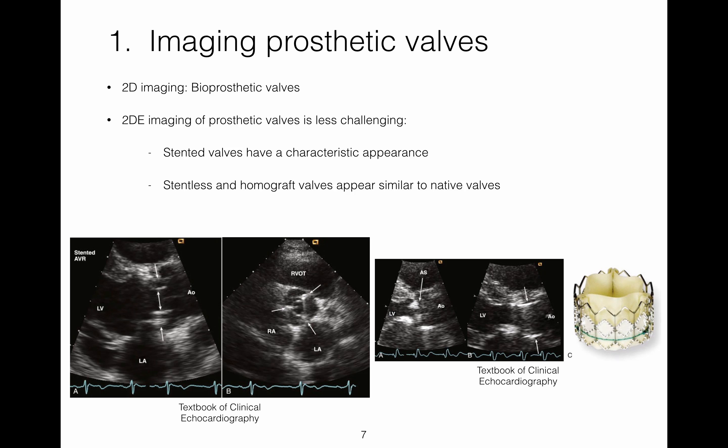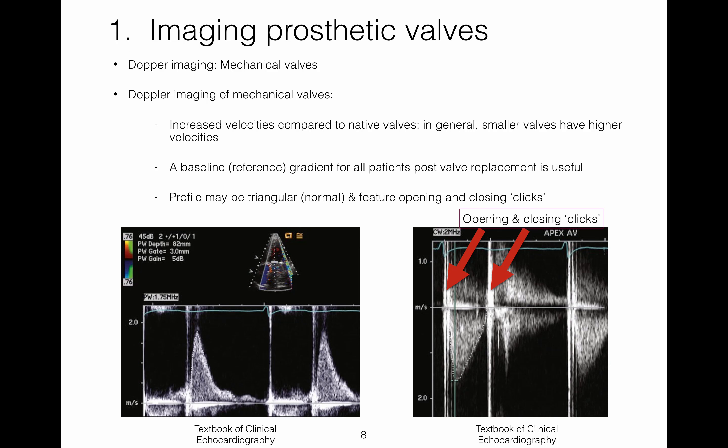Stentless and homografted valves often appear very similar to native valves. Regarding Doppler imaging of mechanical valves: mechanical valves have higher velocities compared to native valves, and in general the smaller the valve the higher the velocity. A baseline gradient for all patients post valve replacement is very useful as it provides a reference measurement for subsequent exams. The spectral Doppler profile of a mechanical valve may be triangular, which is normal, and opening and closing clicks are another normal part of the spectral display.